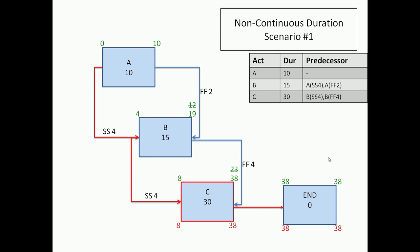On the backward pass, we get 38 as the late finish; late start goes to 8, and when I take it back on the finish-finish relationship, I get 34 — that is 38 minus 4. If I went with 34 minus 15 I would get 19, but if I go through the start relationship for the start of B I get 8 minus 4 which is 4. In the backward pass the minimum value controls, so this would be 4. Going back one more step: 4 goes to 0 and 34 goes to 32. So we have the solved forward pass and backward pass network.